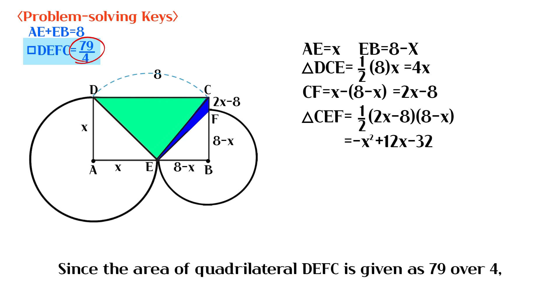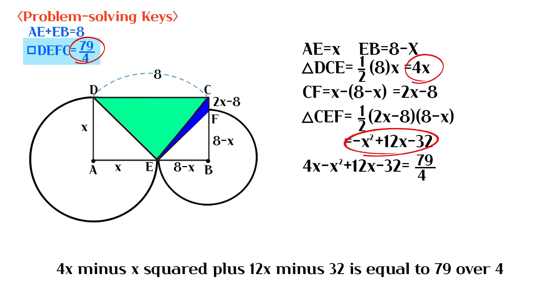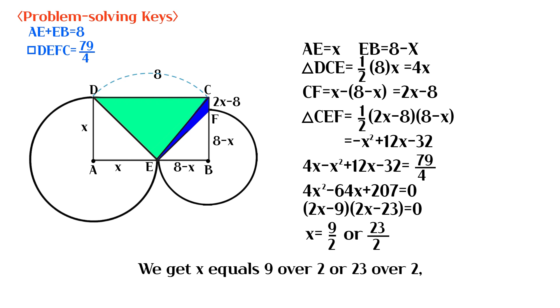Since the area of quadrilateral DEFC is given as 79 over 4, 4x minus x squared plus 12x minus 32 is equal to 79 over 4. We get x equals 9 over 2 or 23 over 2. And x must be less than 8. Therefore x is 9 over 2.